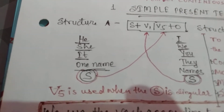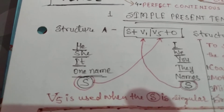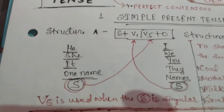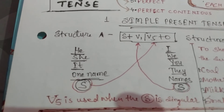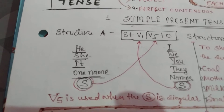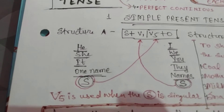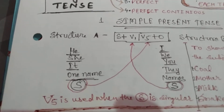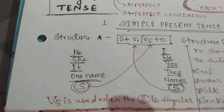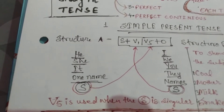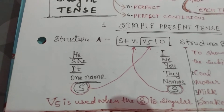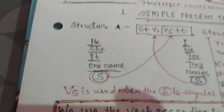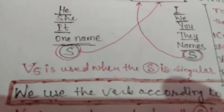In Structure A — Subject + V1 or V5 — you can see two arrows crossing each other. Where do we use V1 and where do we use V5? With he, she, it, or a single name, we use V5. With I, we, you, they, and plural names, we use V1. So V5 is used when the subject is singular.